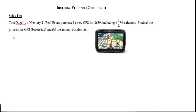Tom Degali of Century 21 Real Estate purchased a new GPS for $639, including 6.5% sales tax. Find A) the price of the GPS before tax and B) the amount of sales tax.